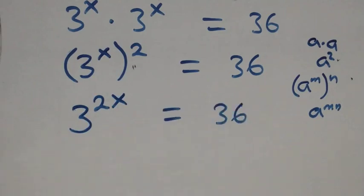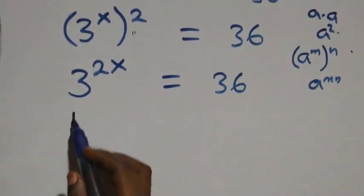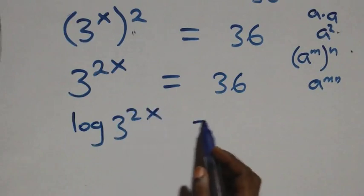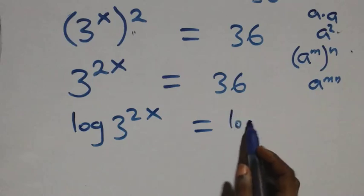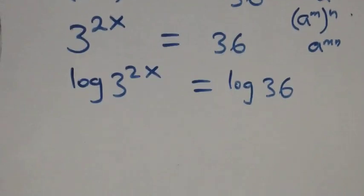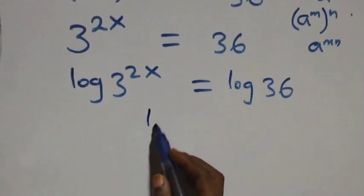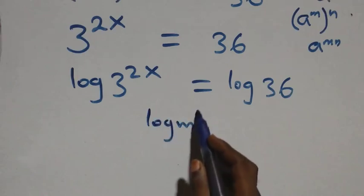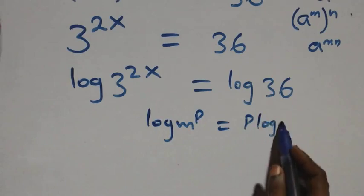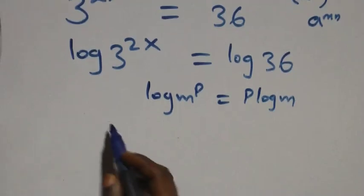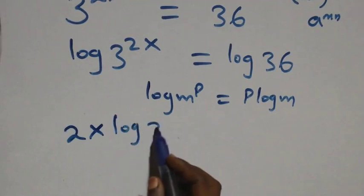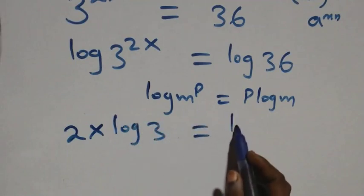The next step: we take the log on both sides. That is, we have log of 3 raised to power 2x equals to log 36. Then we apply the power rule of logarithms — log of m raised to power p equals p times log m — so what we have becomes 2x log 3 equals log 36.